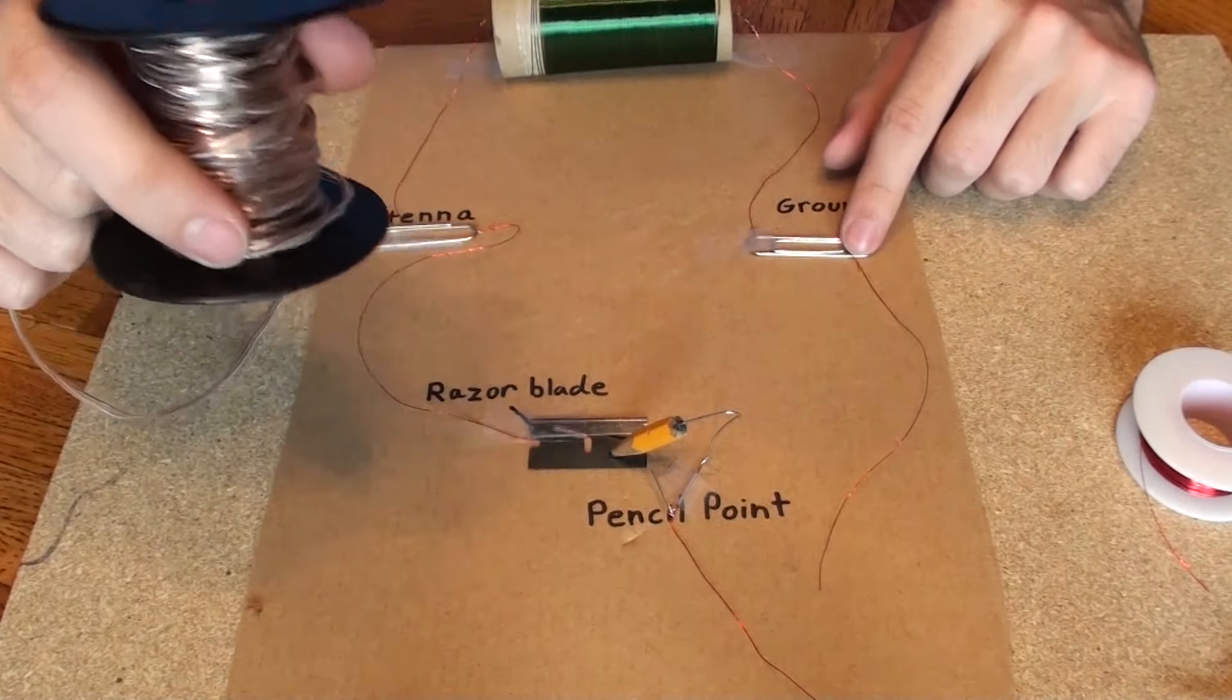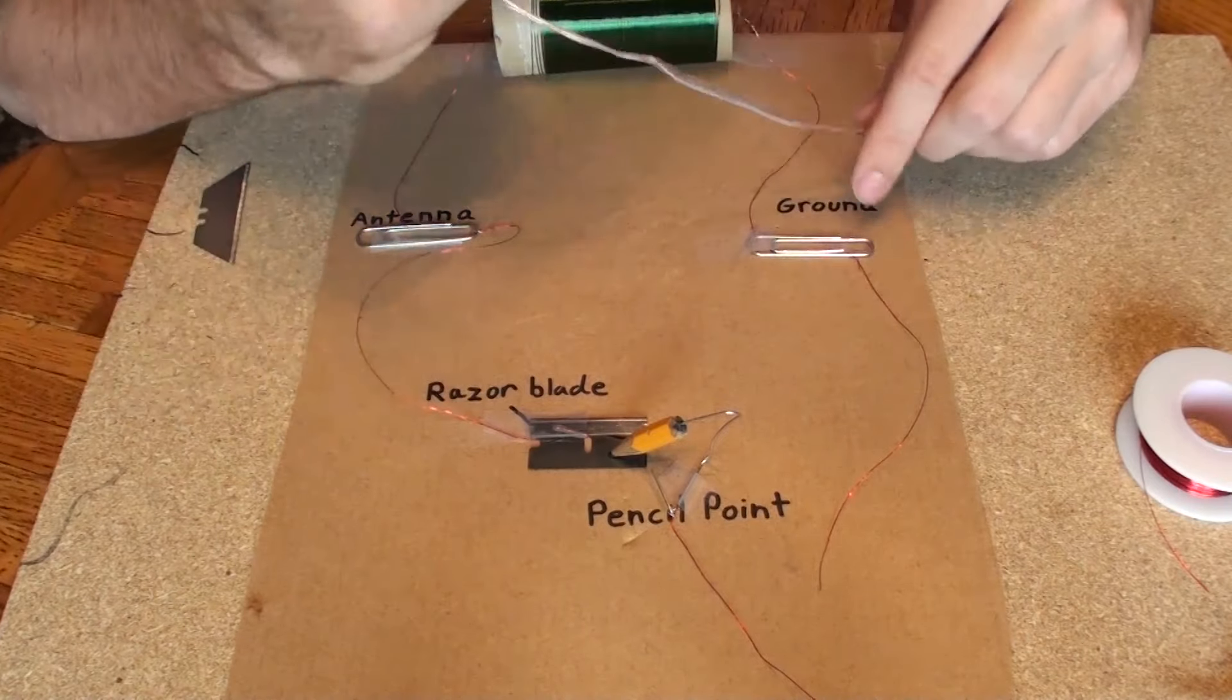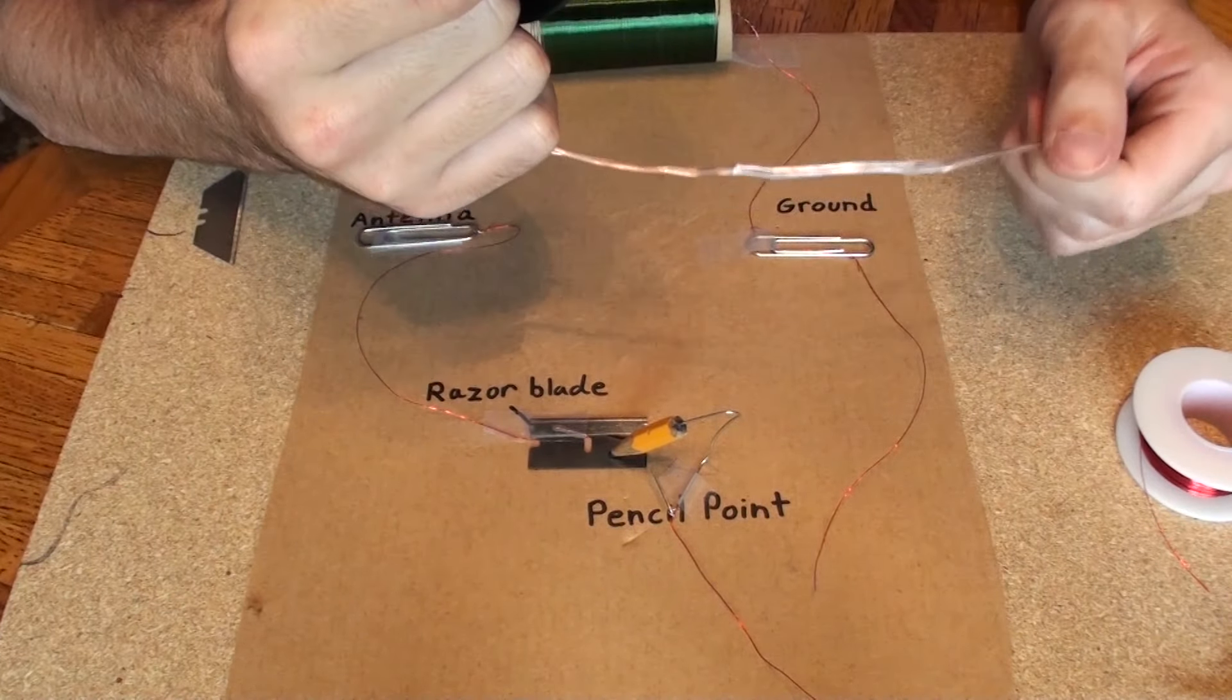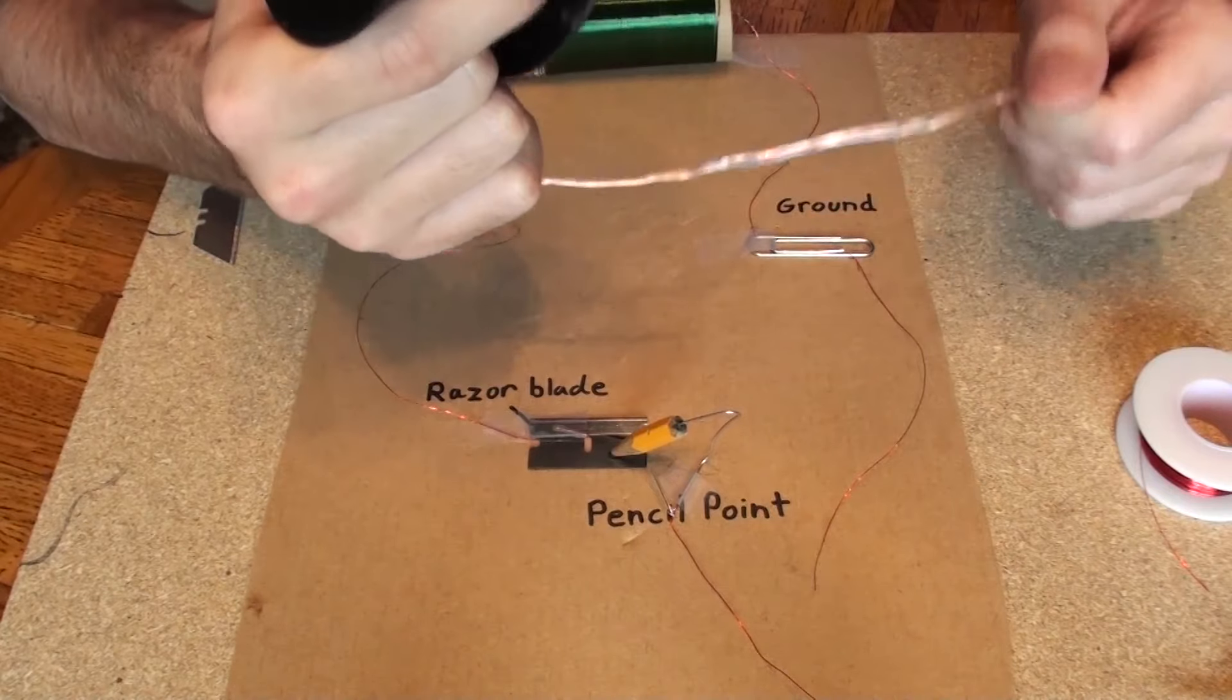And for the ground, I'll do the same thing. I'll take some of the speaker wire, attach it to the ground, and I'll plug it into one of the outlets. But make sure to plug it into the ground because if you don't, you'll shock yourself.